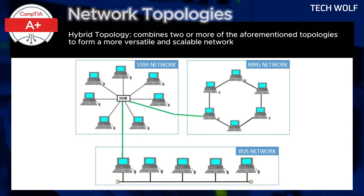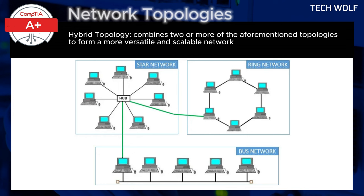Tree topology is scalable but depends on key hubs. Hybrid topology offers flexibility but can be costly and complex to manage. The choice of topology depends on the specific needs of the network, including size, cost, performance, and reliability requirements.